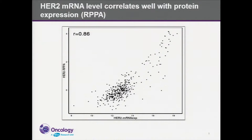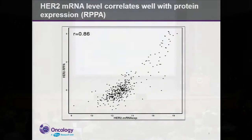Protein expression would be the optimum data to use for identifying such targets. However, the availability of protein expression data is far less than the availability of messenger RNA expression data across different tumor types and normal tissue types. So we resorted to messenger RNA gene-level expression as an approximation for protein expression to estimate target expression on the tumor cell surface as well as in normal tissues.